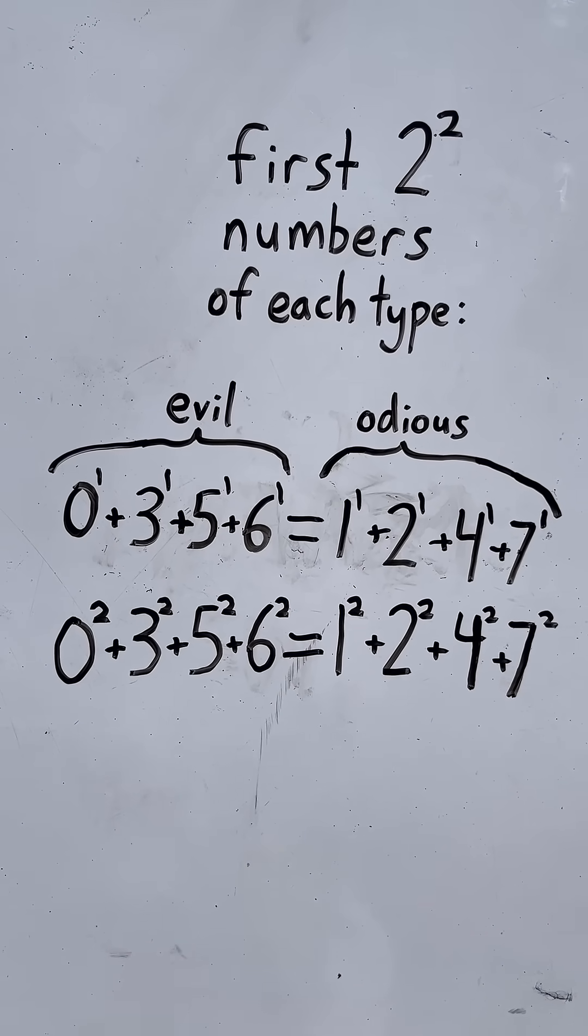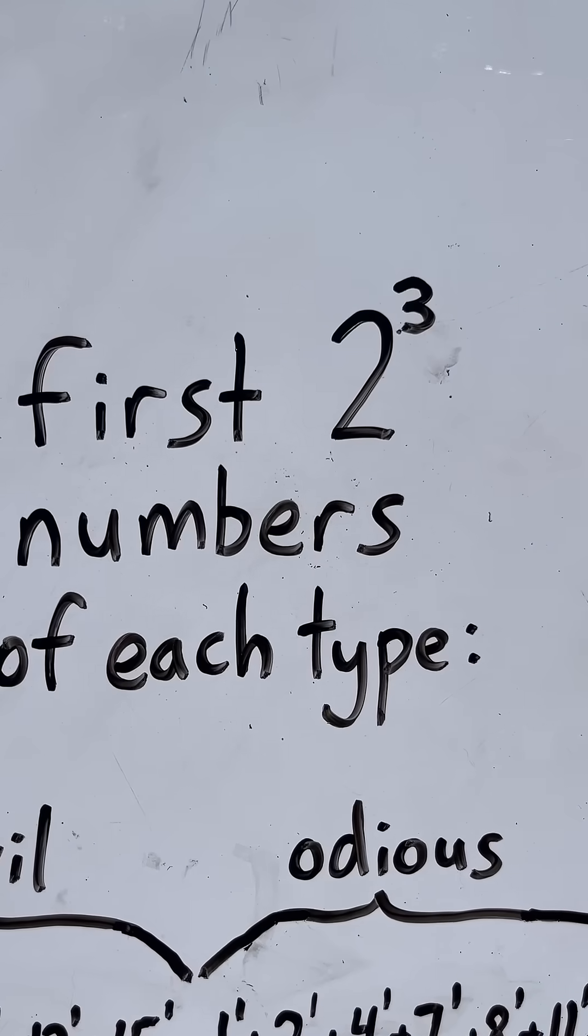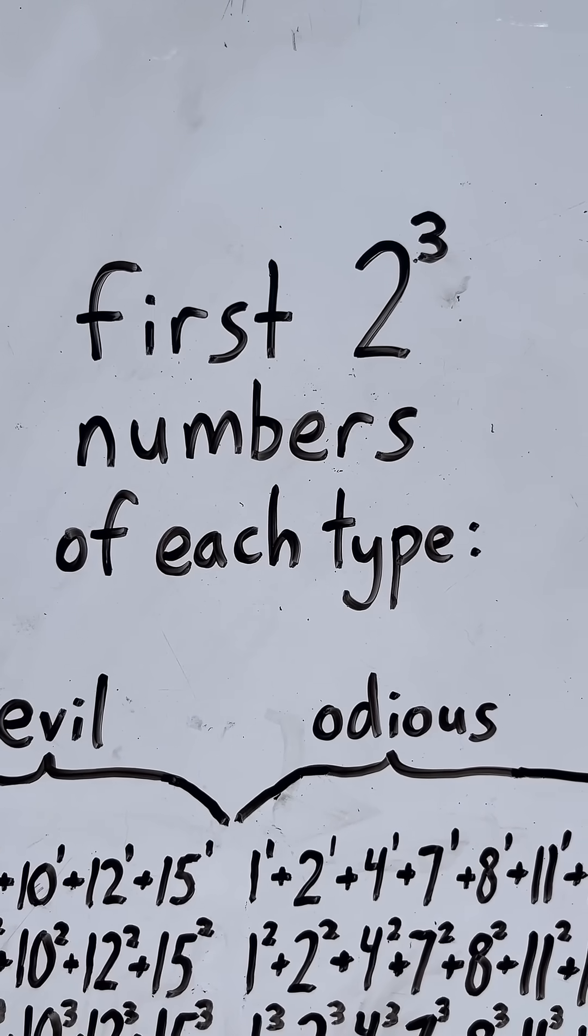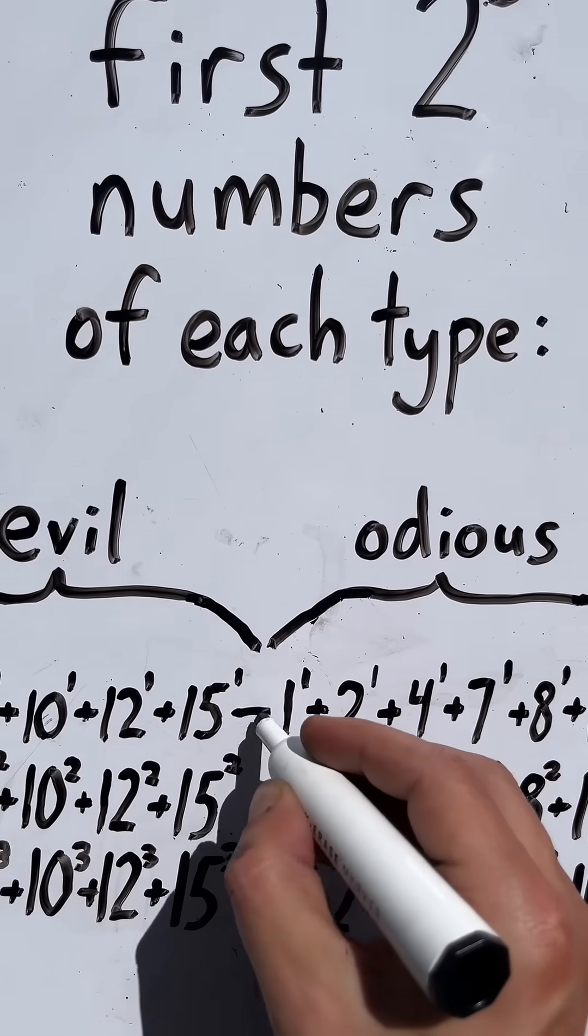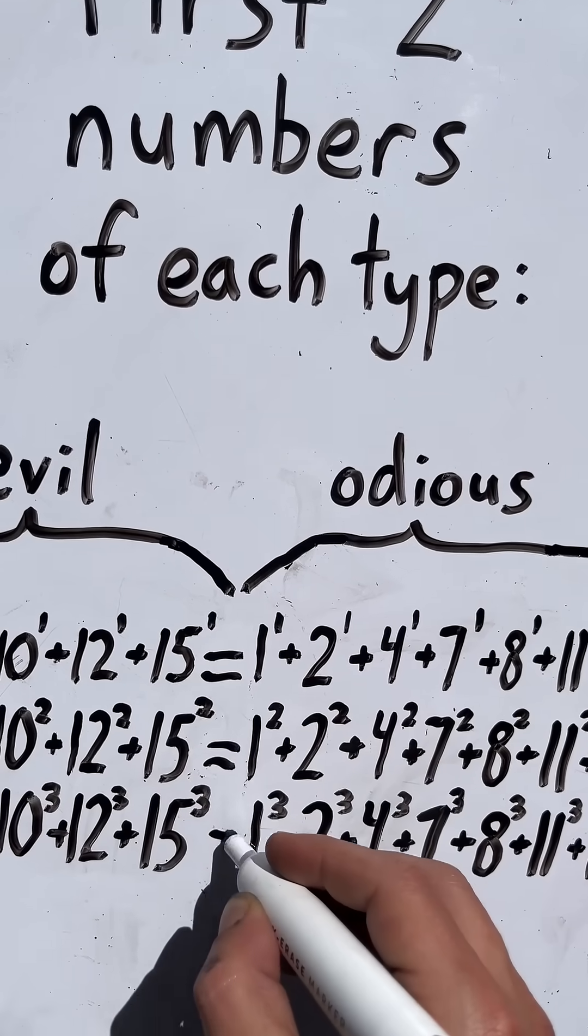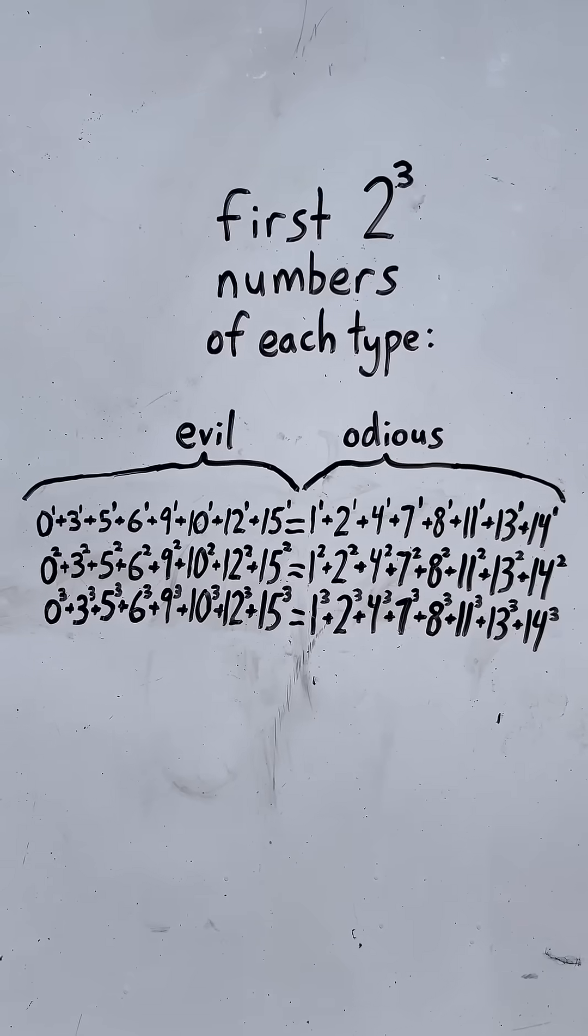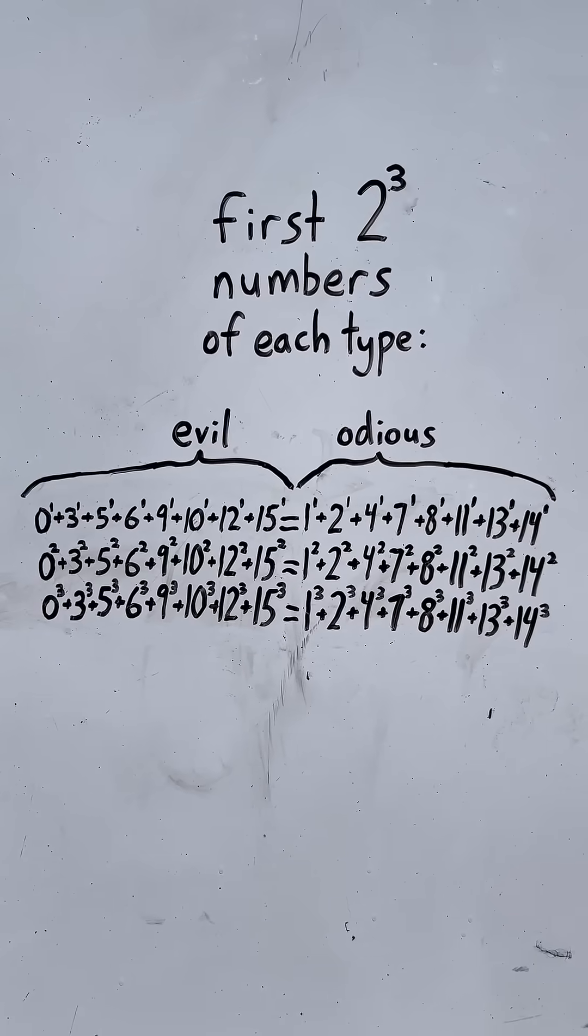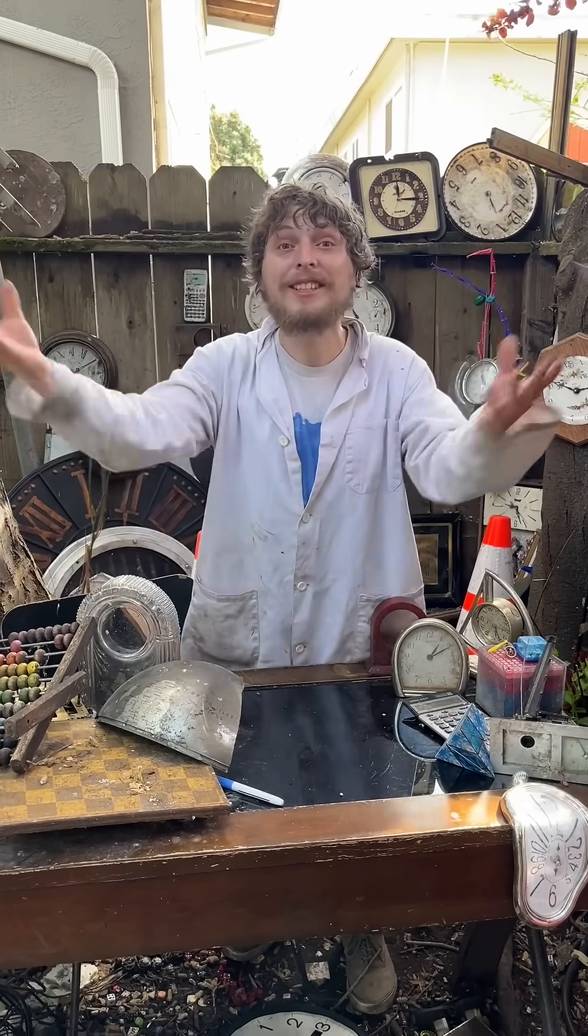And if you take the first eight, which is 2 to the third power amount of each type, you'll find that the first powers, second powers, or third powers add up to exactly the same thing. And this pattern continues forever.